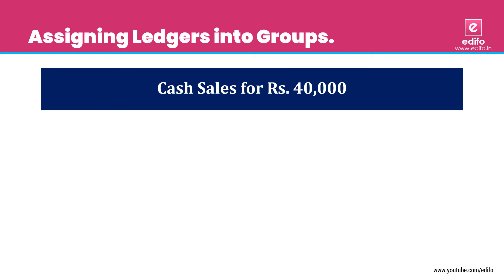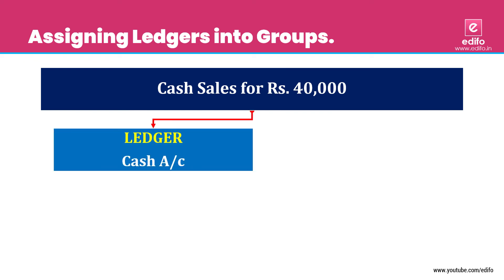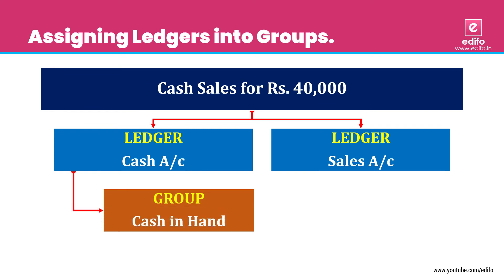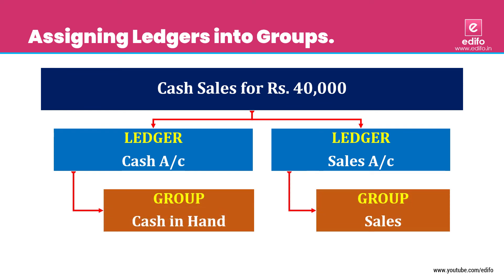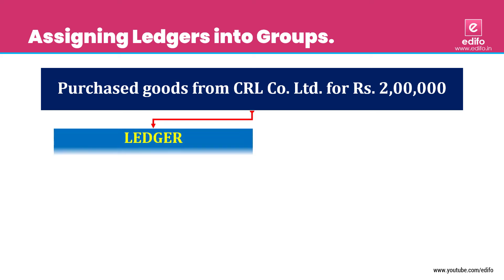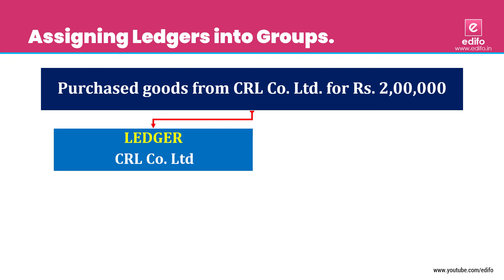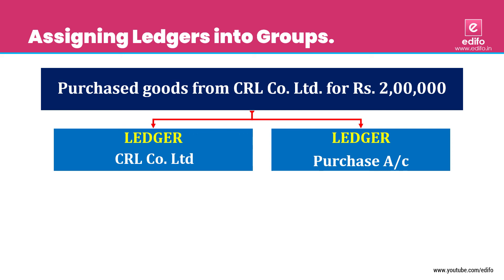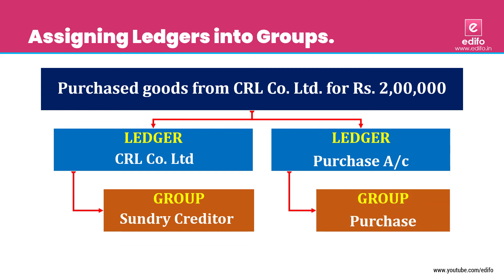Next transaction: cash sales. Two simple aspects — cash account and sales account. Cash belongs to 'Cash in Hand' and sales belong to 'Sales' group. Next: purchase goods from CRL Company Limited for 2 lakh. This is a credit purchase, so CRL Company Limited should be a sundry creditor and the purchase account belongs to the 'Purchase' group.